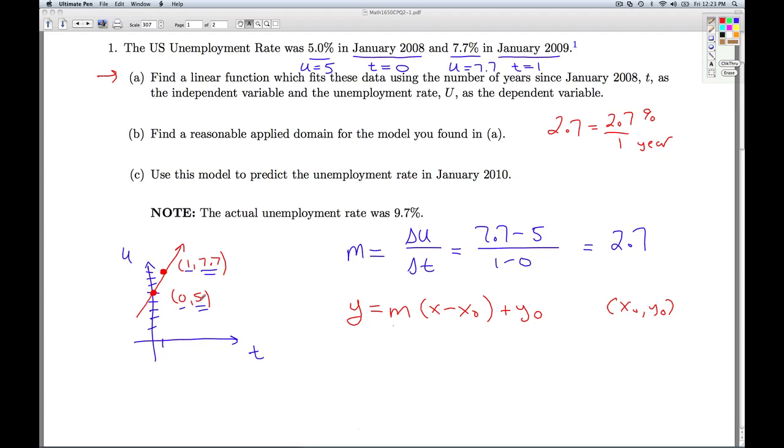Well, we have to remember, we're using t's and u's. t is the independent variable, it's acting like the x, u is the dependent variable, it's acting as the y. So, I'm going to use u as the dependent variable.